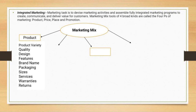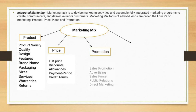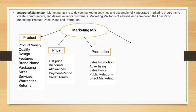The second P is Price, which includes list price, discounts, allowances, payment period and credit terms. The third P is Promotion, which includes sales promotion, advertising, sales force, public relations and direct marketing. The fourth P is Place, which includes channels, coverage, assortments, locations, inventory and transport. These four P's are very important for integrated marketing.